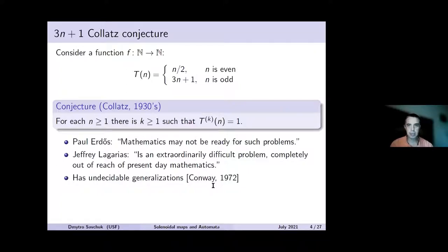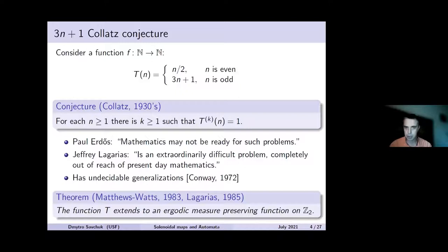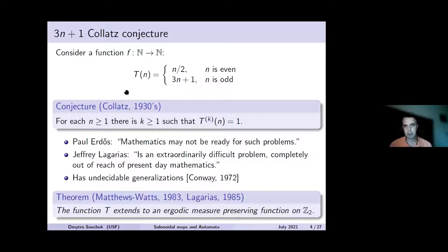What does this have to do with p-adic analysis — namely two-adic analysis? There is a theorem, first proved by Matthews in a somewhat more general form in 1983, and then formulated as such by Lagarias in 1985: the function T, this function of a natural argument, extends to an ergodic measure-preserving function on the ring of two-adic integers. This doesn't completely solve the conjecture, because the integers have measure zero in Z2. So despite T being ergodic — meaning the only T-invariant subsets have measure zero or one — it still doesn't settle the dynamics on the naturals. But we can now study this map as a map of Z2.